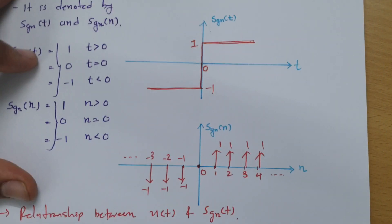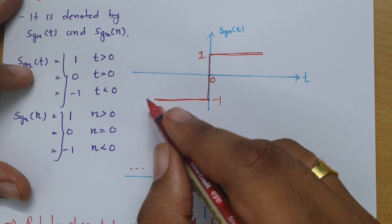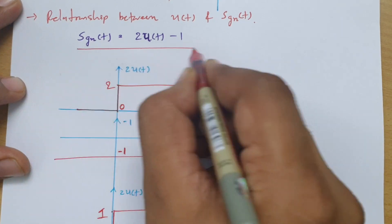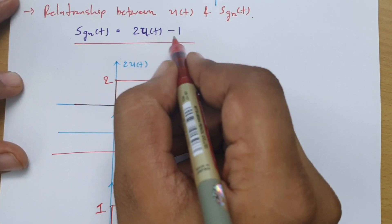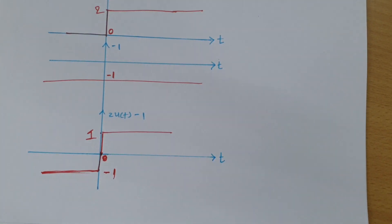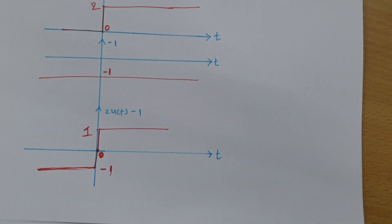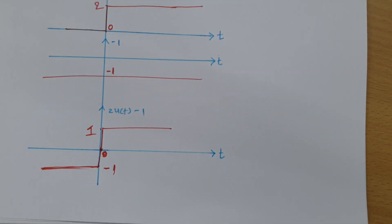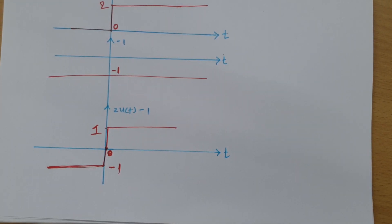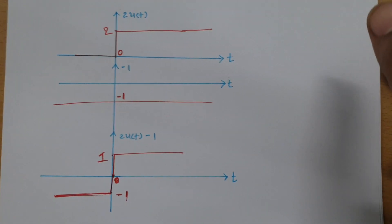As you can see, I have already drawn the signum function. For t greater than 0 it is 1, and for t less than 0 it is minus 1. This confirms the relationship: signum function equals 2·u(t) minus 1. That is how we can prove the relationship between signum function and unit step. If you have any query, place it in the comments and we can have a discussion. These questions are essential in university examinations, so note it down. Thank you so much for watching.